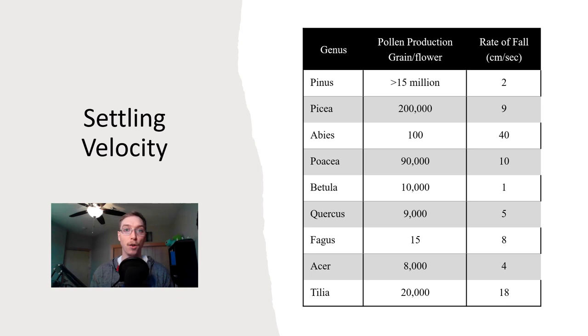Well look here, the pollen production by grain per flower and then the rate of fall or their settling velocity. By and large, pinus, pine trees, coniferous trees produce a ton of it and it's got a relatively slow fall velocity, so two centimeters per second, meaning that can stay suspended and be distributed widely compared to other different types of trees. We can kind of get an idea for how pollen can be distributed by dominant species.